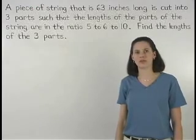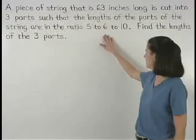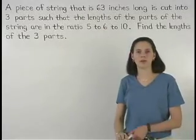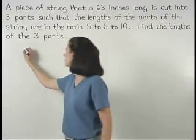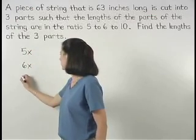Since the three parts of the string are in the ratio 5 to 6 to 10, we can represent the parts as 5x, 6x, and 10x.